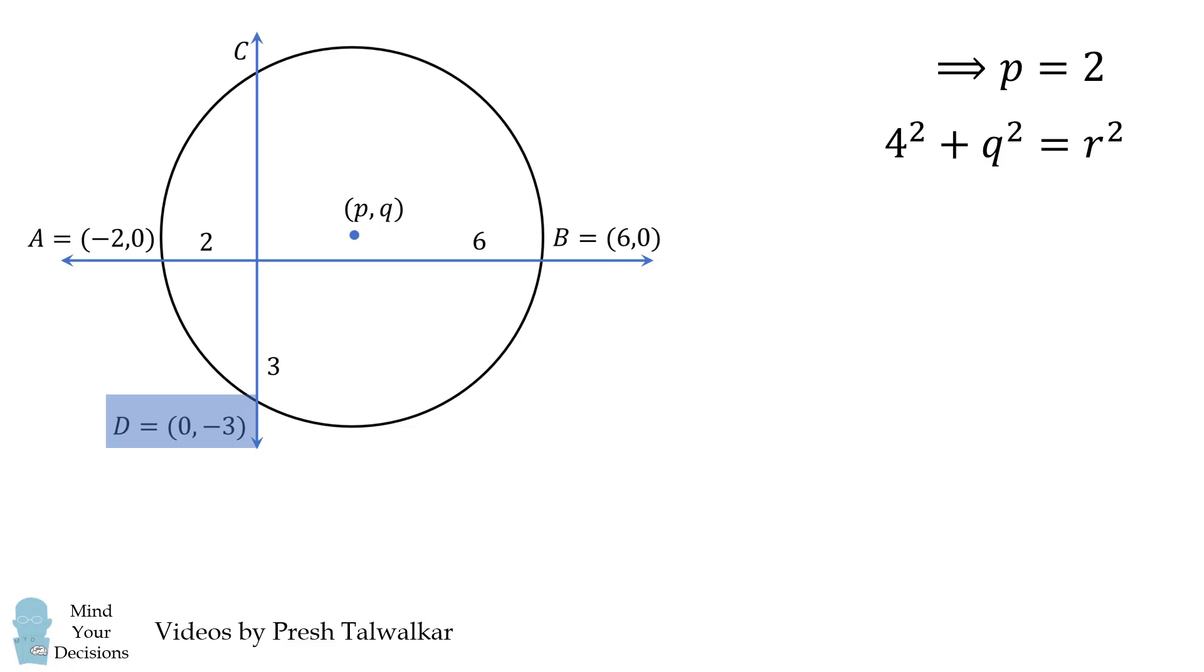We now get an equation using point D. We again use that p is equal to 2 to simplify our equation. Now using these two equations, we can subtract one from the other and we'll eliminate the r squared term. This will allow us to solve that q is equal to 0.5.